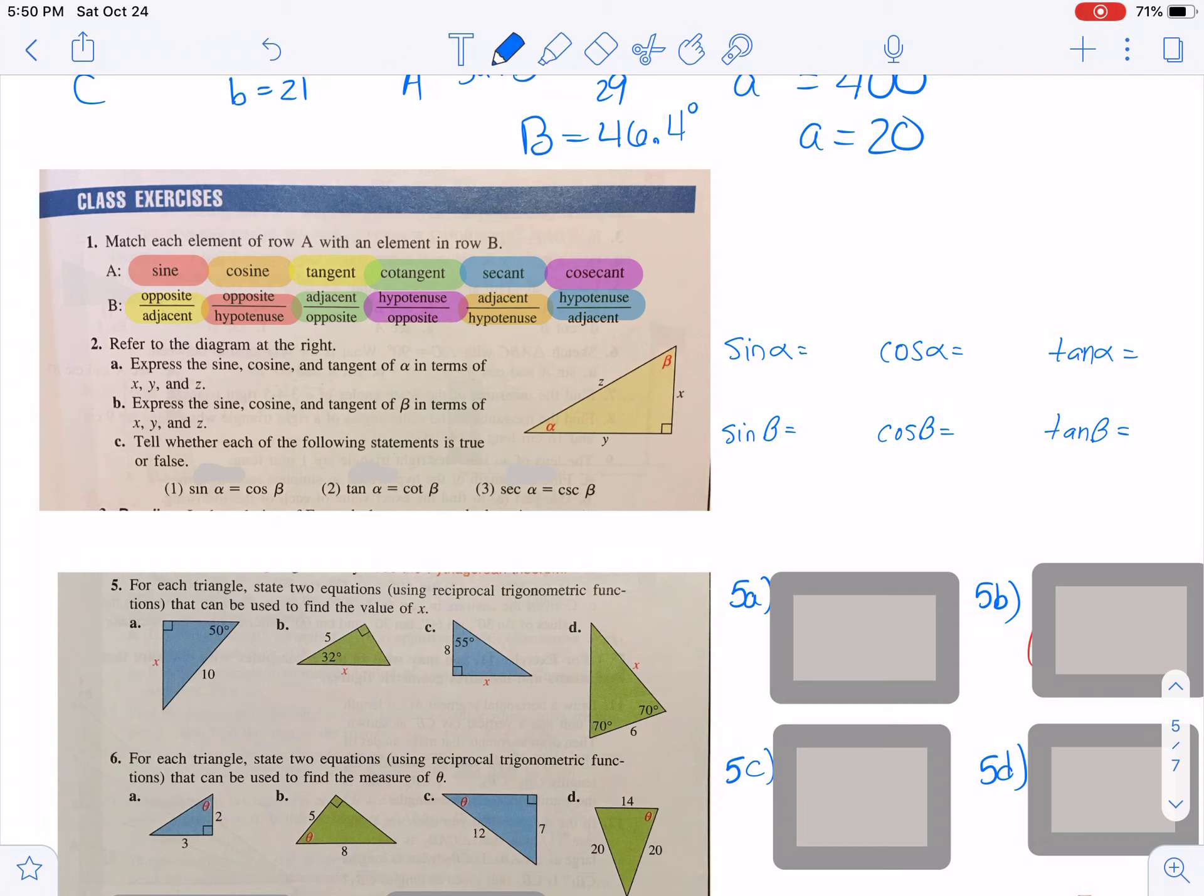Next, we're given a diagram that has only letters in it. The angles are alpha and beta here, and the sides are x, y, z. And they want us to express the sine, cosine, and tangent of alpha in terms of x, y, and z. So the sine of alpha would be x over z. The cosine of alpha would be y over z. And the tangent of alpha would be x over y. Then they want you to do the same thing for beta. So the sine of beta would be y over z. The cosine of beta would be x over z. And the tangent of beta would be y over x.